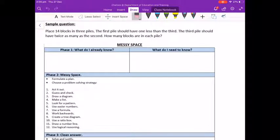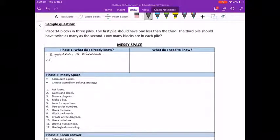Let's look at Phase 1: What do I already know? I know there are going to be three piles with 14 blocks altogether. The first pile will have one less than the third, and the third pile will be double the second.